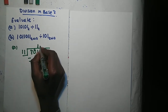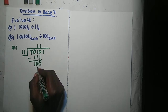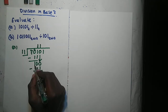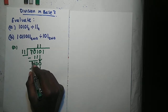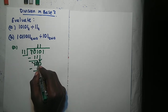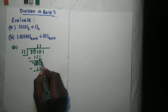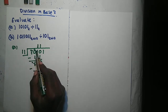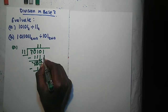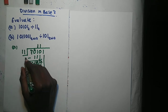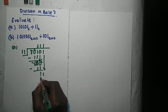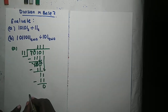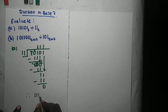11 into 100 — it goes in once. So 1 times 11 gives us 11, and we subtract. 0 minus 1 can't, so we borrow: we get that 1, remain with 0, it becomes a 2, from the 2 we get a 1 and remain with 1, and the next position becomes a 2. So 2 minus 1 gives 1. Then 11 into 1 — it can't, so we bring down the last 1. 11 into 11 — it goes in once. 1 times 11 gives 11, we subtract and get 0. So our answer is 111 in base 2.